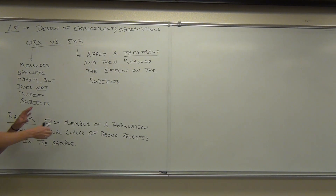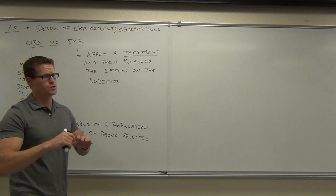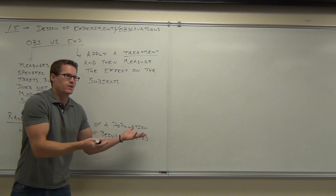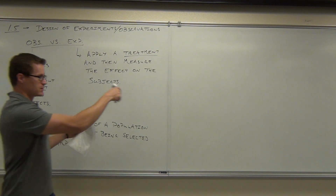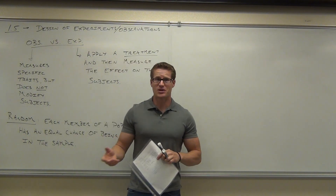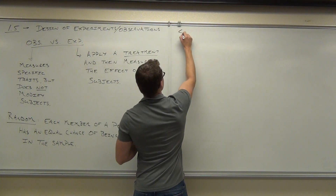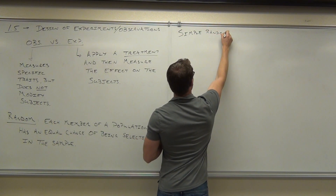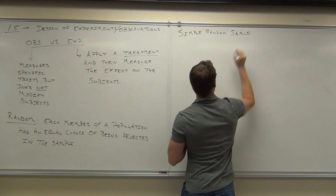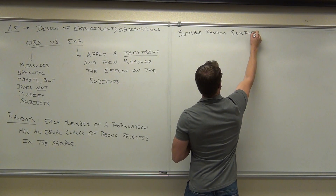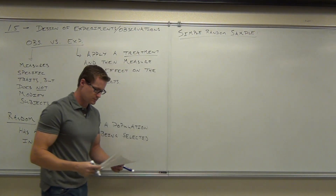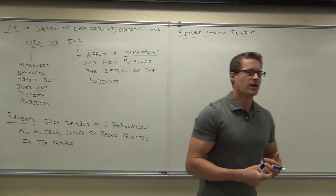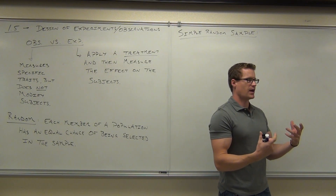Now I'm going to give you one more definition, and then I'm going to show you some ways to make this happen — some very common types of collecting data that people use all the time to ensure a random sample. The last definition I have for you, before we get into the methods, is called 'simple random' — it sounds simple because the word's in it, but it's kind of a unique idea. A simple random sample means that any group of the same size has an equal likelihood of being selected.